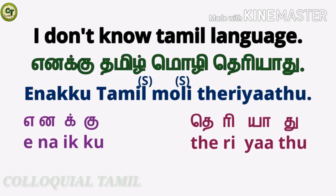To answer 'I don't know Tamil language,' you say: 'enakku Tamil moLi theriyadu.' You already know 'Tamil', 'moLi', and 'theriyadu.' For 'enakku': this is 'எ', a short sound vowel; this is 'ன', a short sound letter — there are three N sounds in Tamil; this 'ன' is said with small N sound, where the tip of your tongue touches the roof of the mouth right above your teeth. You already know 'க்', a consonant, and 'கு', a short sound letter. Together: 'enakku.' So: 'enakku Tamil moLi theriyadu.'